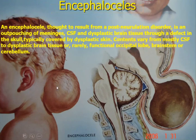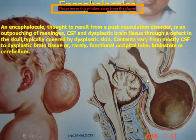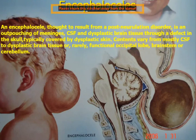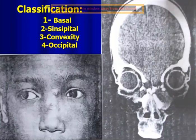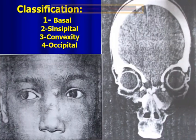Encephalocele can occur anywhere from the nasal bridge to the craniocervical junction in the midline. There is a defect in the skull bone with protrusion of meninges and neural or brain tissue. According to its location, it can be classified as basal or sphenoidal, convexity, or occipital.